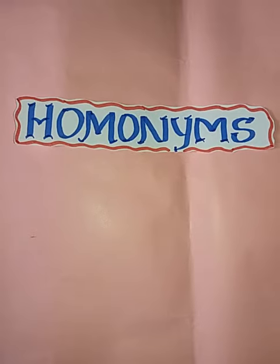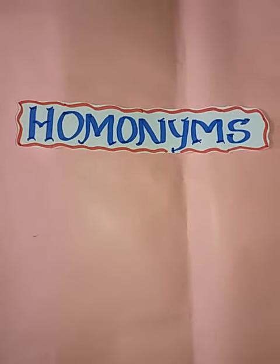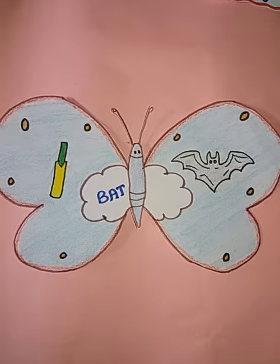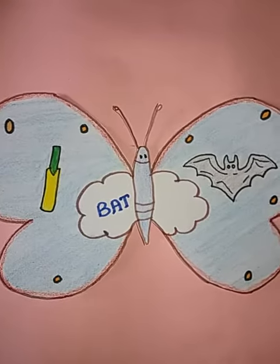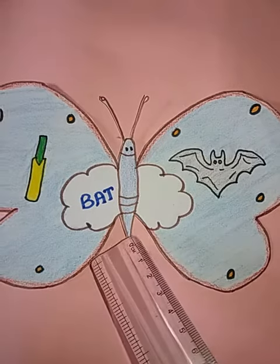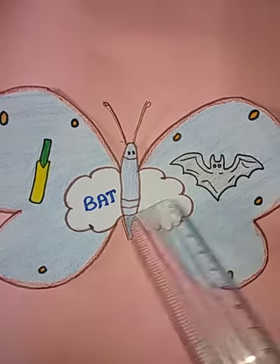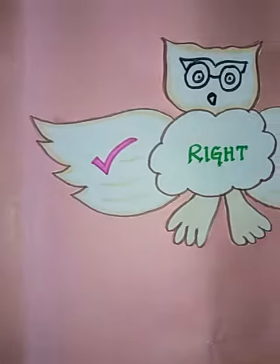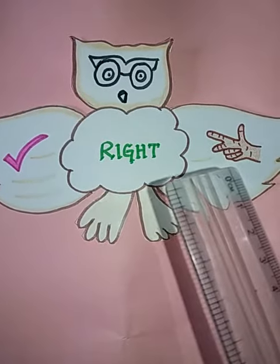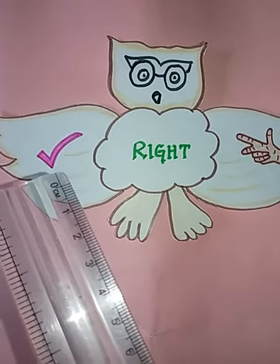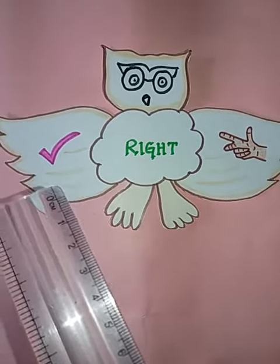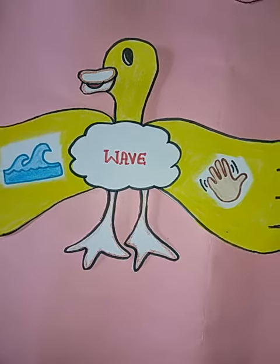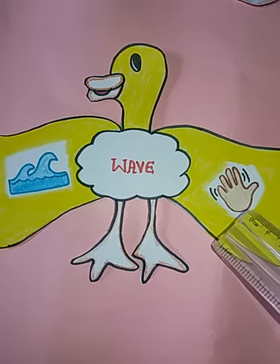So let's get started. As you can see here, the homonym word is 'bat' — one meaning is a cricket bat, and the other is the flying animal. Next, the word 'right' — here is the right hand, and here is the right symbol indicating correct.